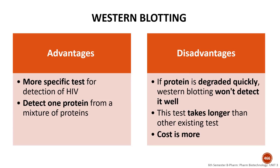What are the advantages and disadvantages of Western blotting? Western blotting can detect a specific protein from a mixture of proteins. It can detect minute changes in temperature, pH, and degradation. Disadvantages include that it takes much more time and the cost is higher.